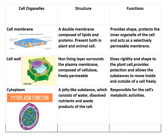Next is the cell wall, which is only present in plant cells and not in animal cells. It is a non-living layer that surrounds the plasma membrane, composed of cellulose, and it is freely permeable — meaning it allows all types of particles to pass inside and outside of the cell. Its functions are to give rigidity and shape to the plant cell, provide protection, and allow substances to move freely inside and outside since it is freely permeable.